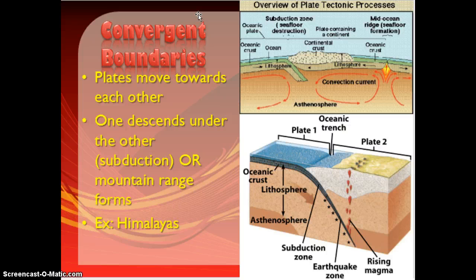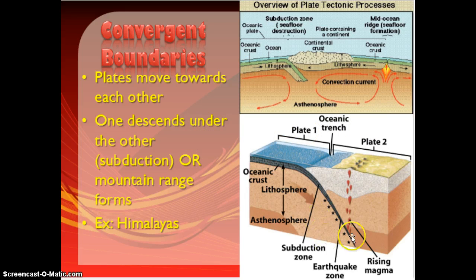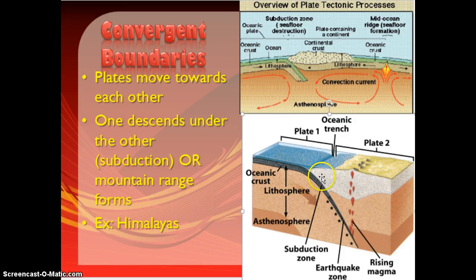Then we have a convergent boundary. In this case, the plates are moving towards each other because the convection currents are moving towards each other. If this happens between two continental plates, you get a mountain range because the two thick continental plates collide and form mountains. But more commonly this happens between an oceanic plate and a continental plate — the oceanic crust is much thinner, so it subducts, or dives underneath the continental plate. This forms what we call a subduction zone. These subduction zones are prime spots for earthquakes because the crust is scraping against each other, and because the crust melts as it dives down, they often have volcanoes along them as well.